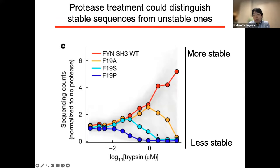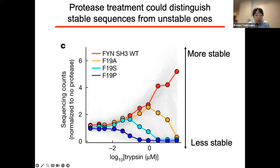Here are the actual results. As I said, we exposed the complex to several concentrations of proteases. In this plot, the X-axis represents the concentration of trypsin and the Y-axis represents the relative sequencing counts normalized to the no-protease sample. For example, the blue protein is very unstable — the fraction of the blue protein was decreased even at the middle range of protease concentration. But in contrast, the red protein is very stable — the fraction of the red protein was increased as the protease concentration goes up. Using this kind of data, we can infer the folding stability of proteins in a very accurate manner.